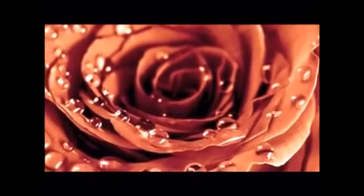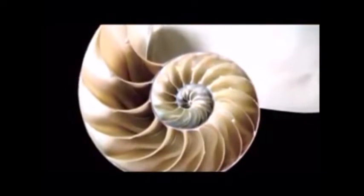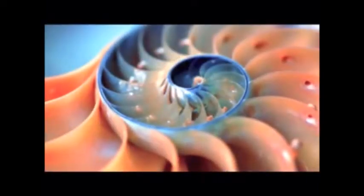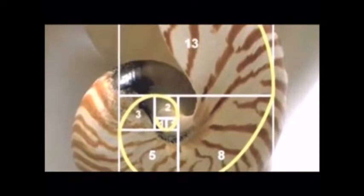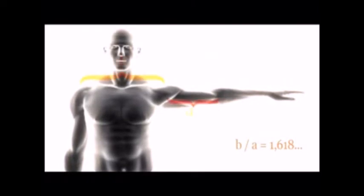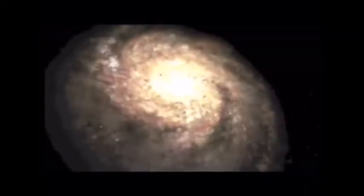Buds on trees, sand dollars, starfish, petals on flowers, and especially the nautilus shell are formed with this exact same blueprint. With each segment of growth, the nautilus adds to itself one more value on Fibonacci's scale.